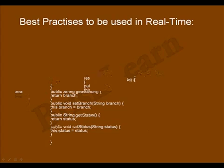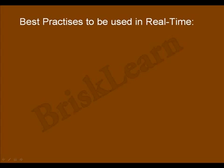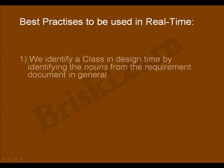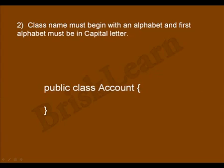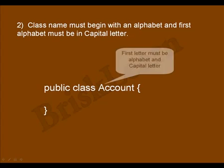Now let us discuss best practices to be used in real time for a class. How do you identify a class? We identify a class at design time by identifying the nouns provided in the requirement document. Second, class name must begin with an alphabet and the first alphabet must be a capital letter. In this example, 'Account' — the first letter A must be an alphabet and capital.